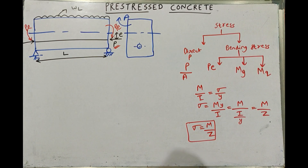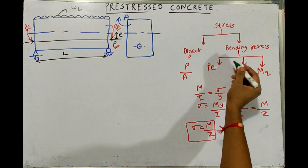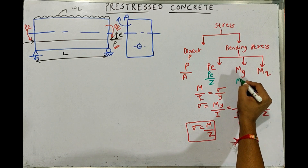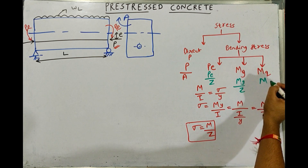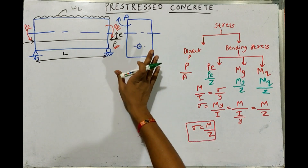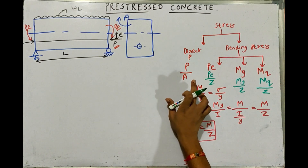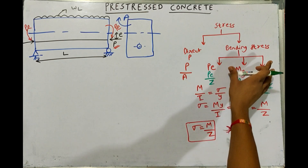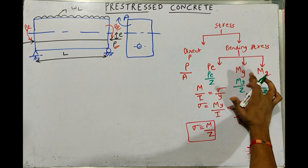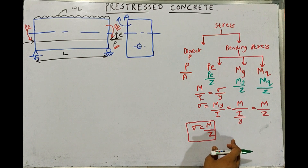For bending stress, sigma equals M/Z. So the bending stress due to the pre-stressing force will be PE/Z, due to dead load will be Mg/Z, and due to live load will be Mq/Z. To summarize: stresses in pre-stressed concrete beams are due to two reasons — direct stress (P/A) and bending stress (M/Z) — where bending stress has three contributing moments: pre-stressing moment, dead load moment, and live load moment.